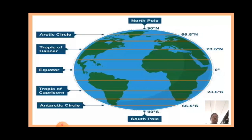Now we have important lines of latitudes. The Earth rotates on its axis at an inclination of 23 and a half degrees and also revolves around the sun. Based on the angle at which the sun rays fall on the Earth, certain lines of latitude gain significance. These are: 0 degrees — equator; 23.5 degrees north — Tropic of Cancer; 66.5 degrees north — Arctic Circle; 90 degrees north — North Pole; 23.5 degrees south — Tropic of Capricorn; 66.5 degrees south — Antarctic Circle; 90 degrees south — South Pole.